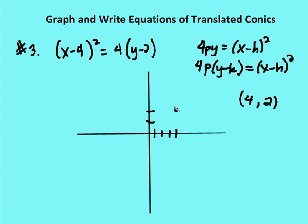Now I have to figure out if the parabola faces up, down, right, or left. When we have y equal to x squared, the parabola faces up. If it were minus y equal to x squared, it faces down. If x equals y squared, it faces right, and minus x equals y squared faces left. So this parabola faces up.